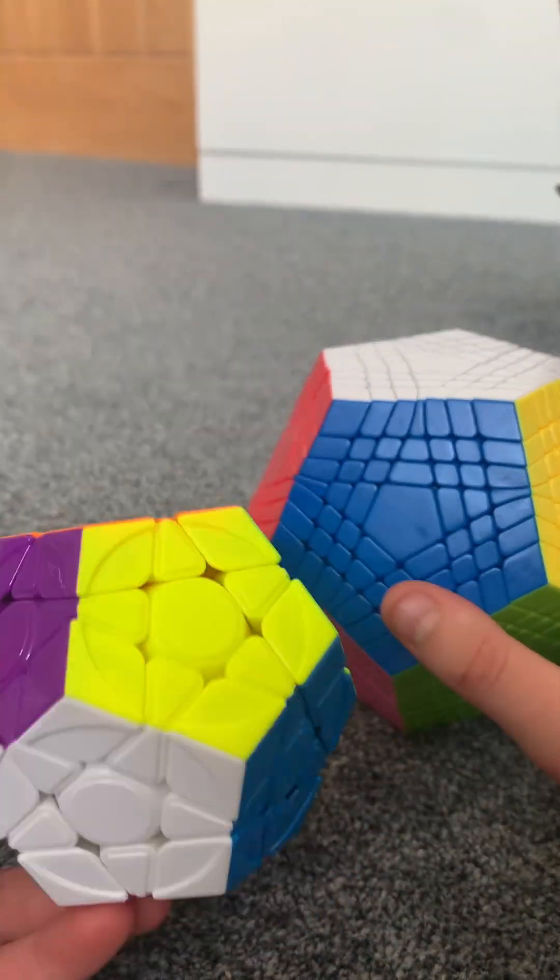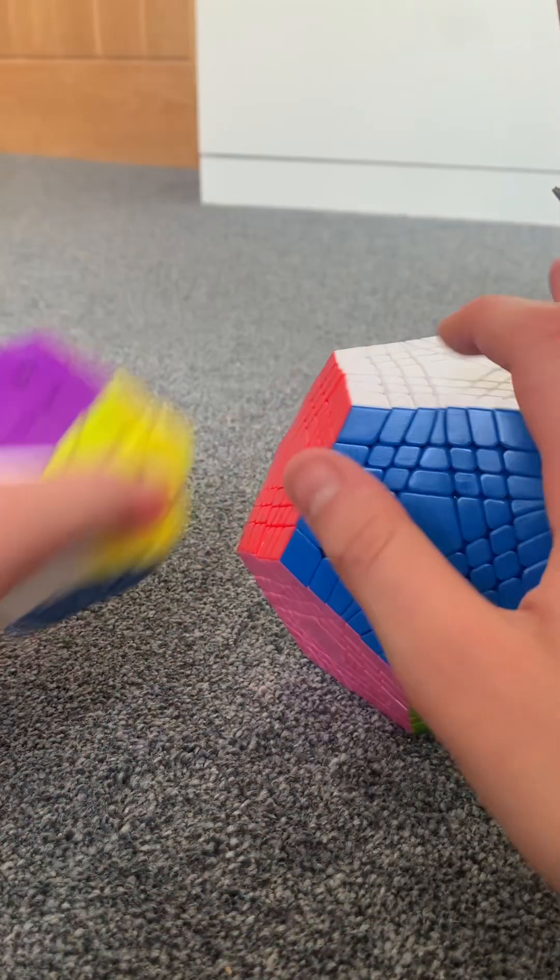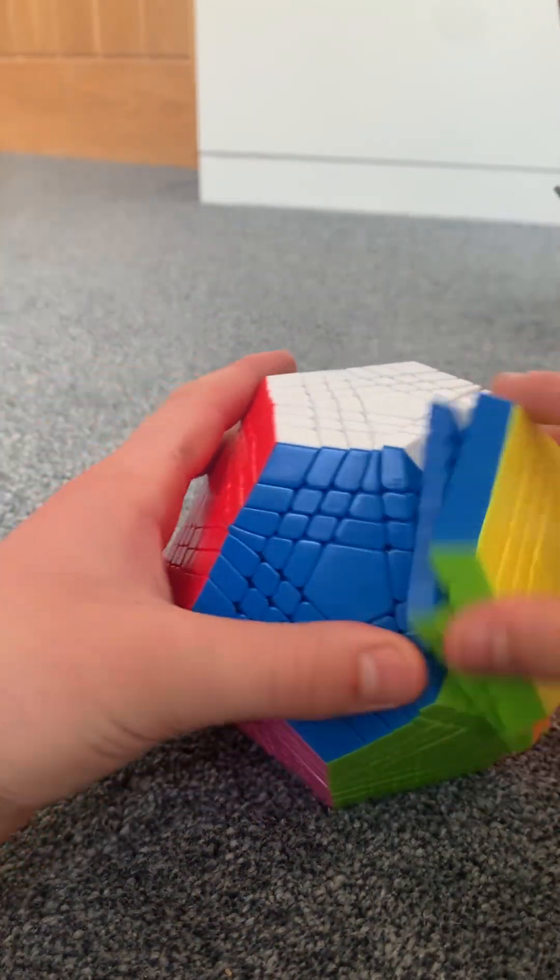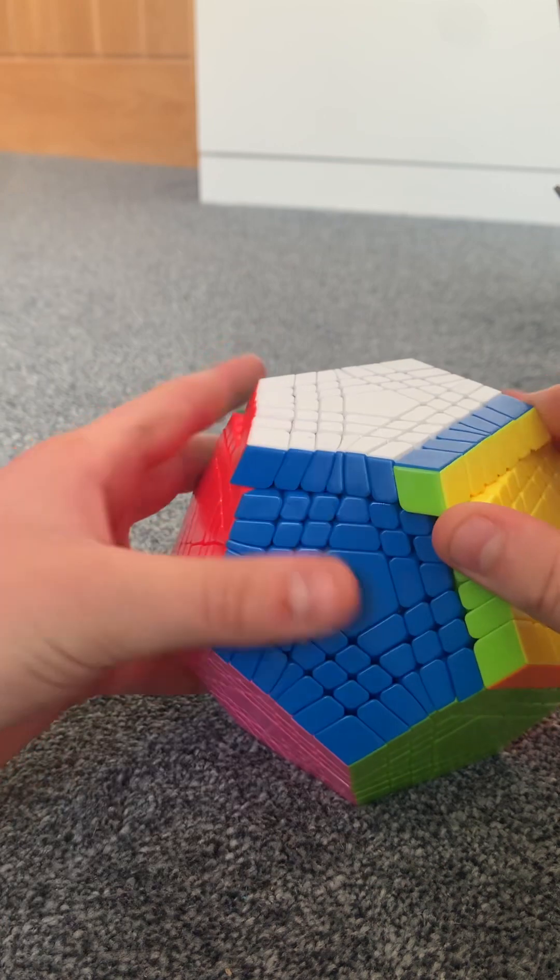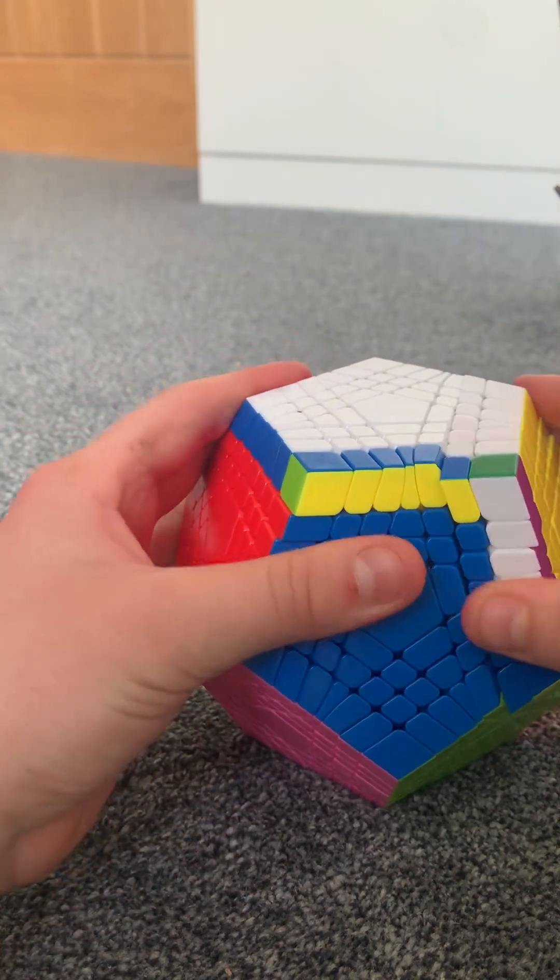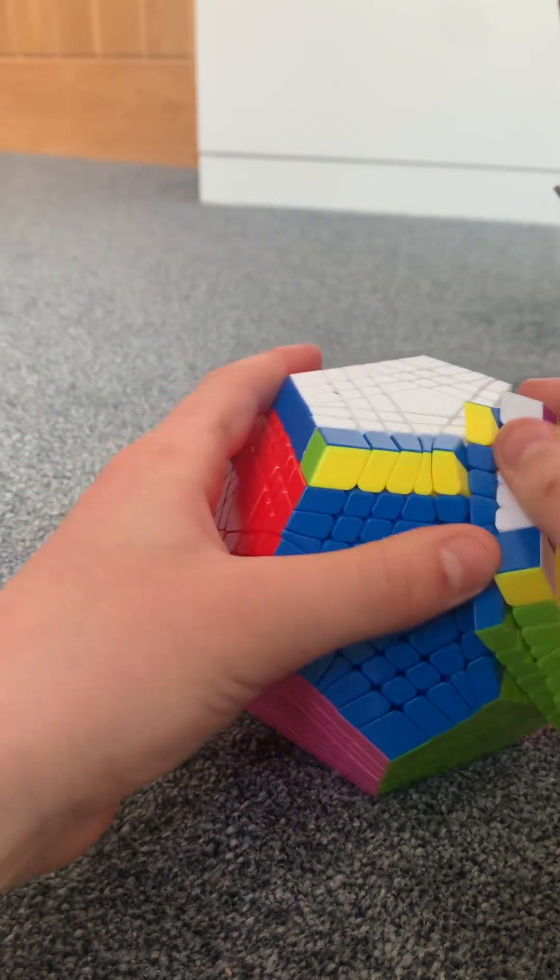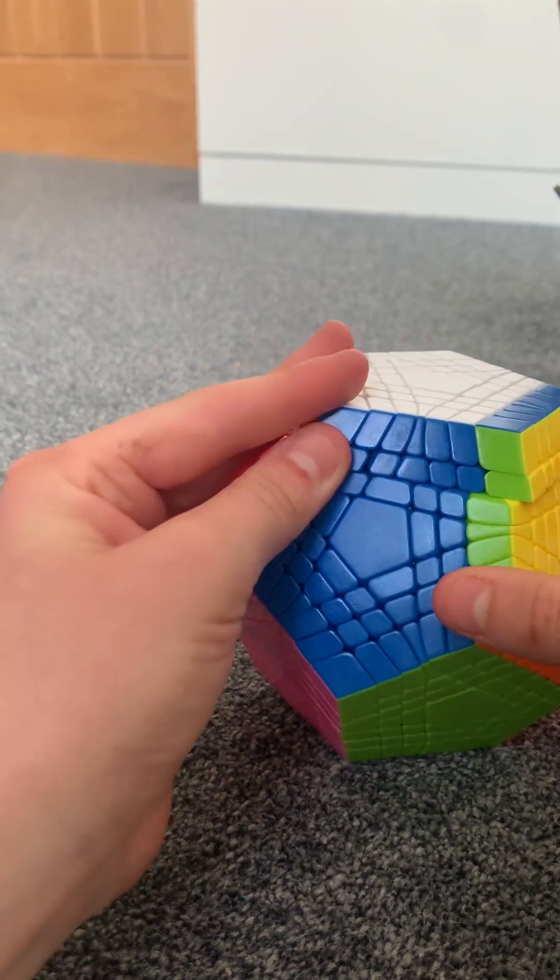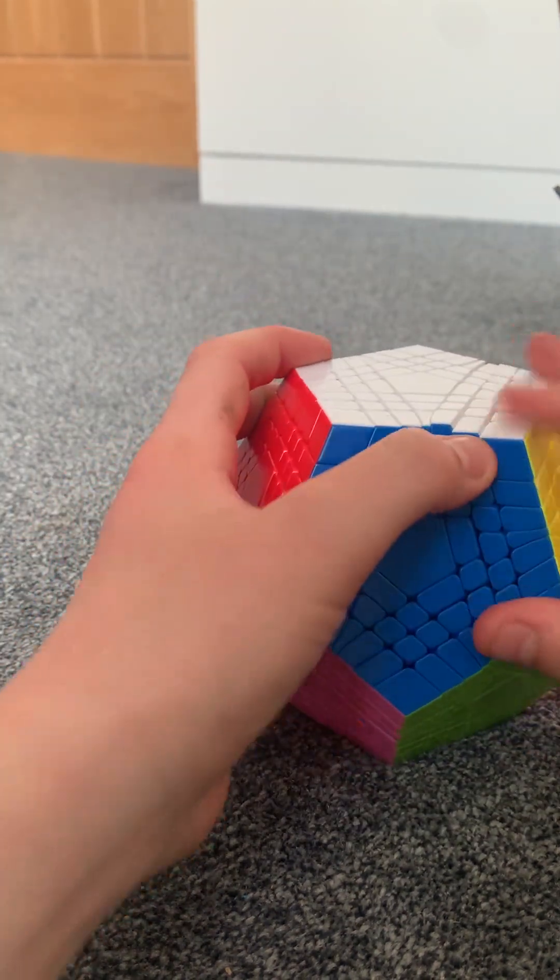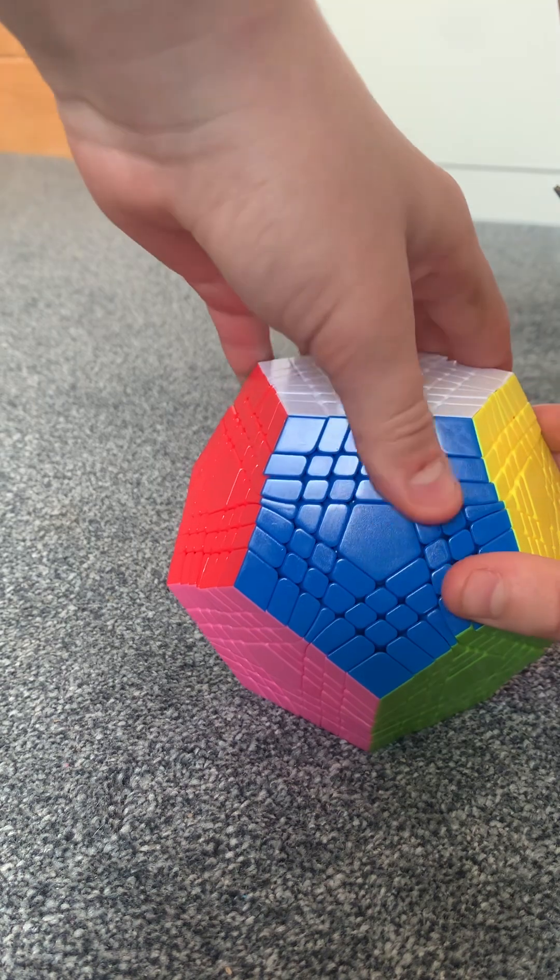But this is a seven-by-seven one, so it turns the same except there's the inner layers like this. There's a few inner layers here.